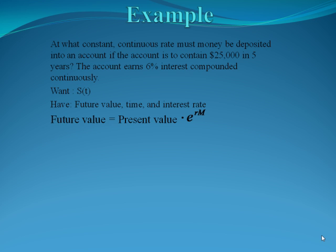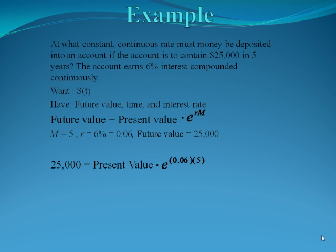Remember, future value equals present value e to the rm. Plugging in what we have, which is m, which is 5, r, which is .06, and a future value of $25,000, our equation becomes 25,000 equals present value e to the .06 times 5. So to solve for our present value, we simply must divide both sides by the e term. So present value, when we plug this into our calculator, is $18,520.46.